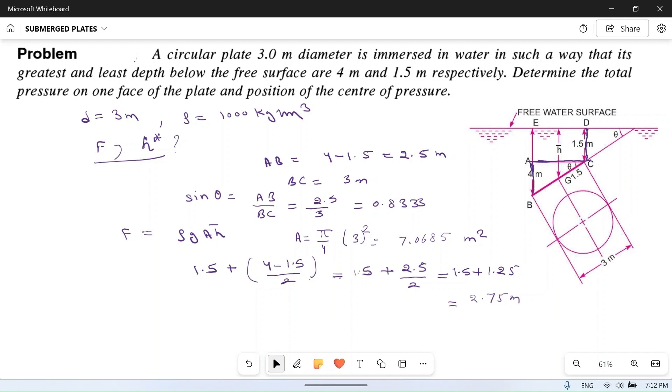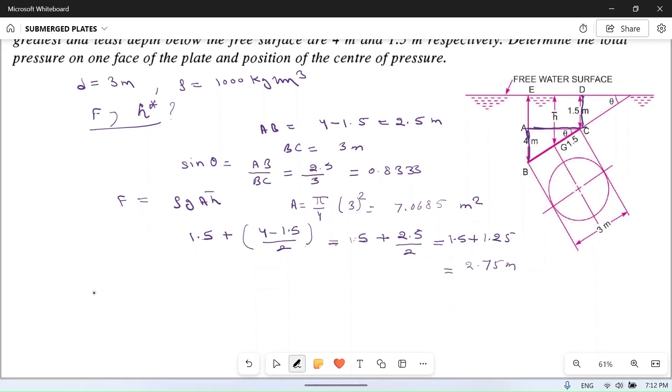So total pressure, now we can put all the values. F is equal to rho, which is 1000 kg per meter cube, into g, which is 9.81 meter per second square.